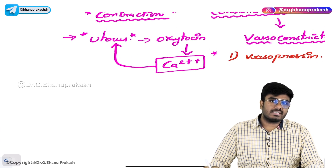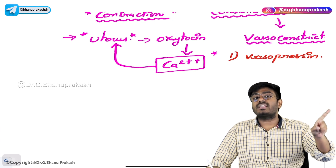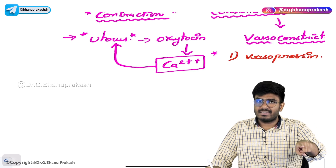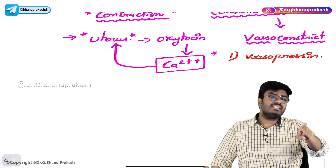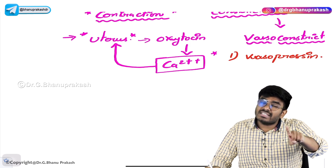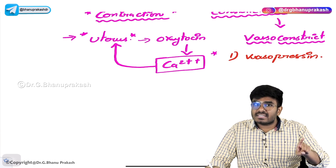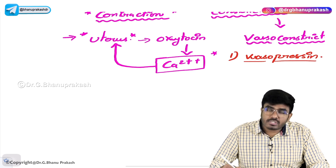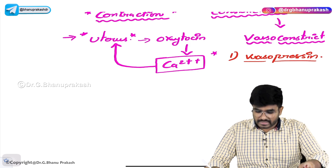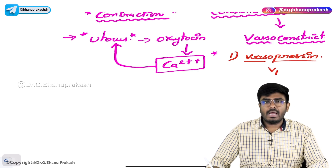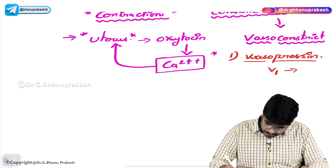Don't confuse — previously we discussed that antidiuretic hormone or vasopressin acts on G-protein coupled receptors on collecting ducts for water reabsorption. For water reabsorption, the receptor involved is a G-protein coupled receptor and the secondary messenger involved is cAMP. That's a totally different place. Here, vasopressin is also involved in vasoconstriction. Here, the receptor involved is the V1 receptor and the secondary messenger involved is calcium.